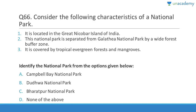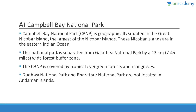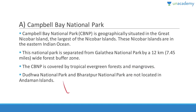Question 66: This national park is located in the Great Nicobar Island of India, separated from Galathea National Park by a wide forest buffer zone, and covered by tropical evergreen forest and mangroves. Answer is A, Campbell Bay National Park. The Great Nicobar Islands are the largest of the Nicobar Islands in the eastern Indian Ocean. Campbell Bay is separated from Galathea National Park by a 12-kilometer-wide forest buffer zone. Dudhwa National Park and Bharatpur National Park are not located in the Andaman Islands.